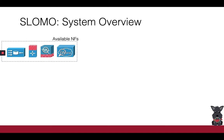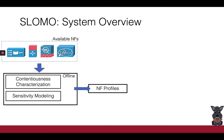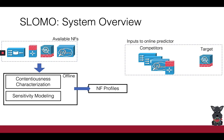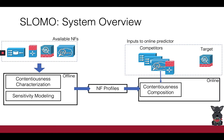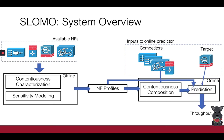To understand how these concepts map to a concrete system, SlowMo consists of an offline and an online component. Given a library of available NFs, SlowMo's offline component is responsible for profiling each NF for contentiousness and sensitivity. In real time, SlowMo takes as input a target NF and a set of competitors. The first step of the online process is to compose the aggregate contentiousness of the competitors and then provide that value as input to the target sensitivity function in order to predict its throughput.